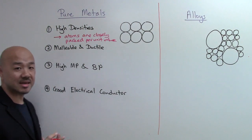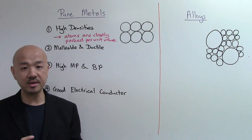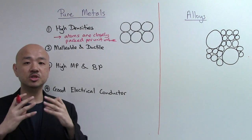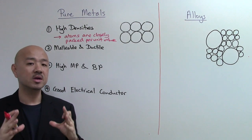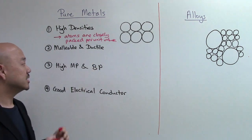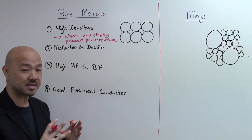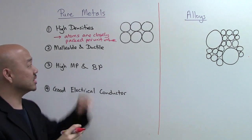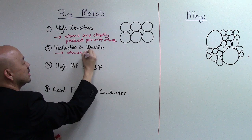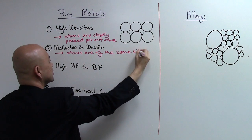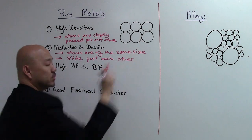Next, metals are malleable and ductile. Malleable refers to the ability to bend without breaking, while ductile refers to the ability to be drawn into wires without breaking. The reason metals are malleable and ductile is that all atoms are of the same size, and therefore they can easily slide past each other when a force is applied.